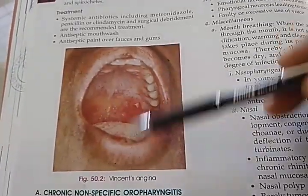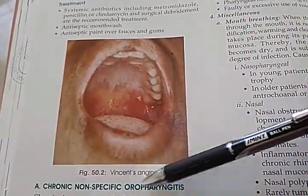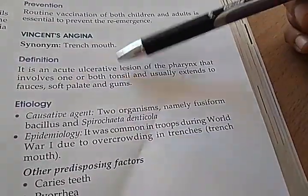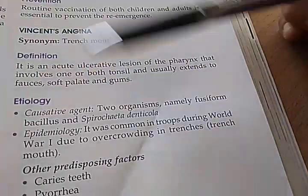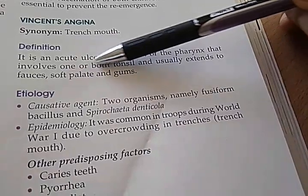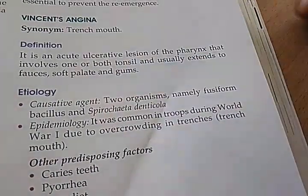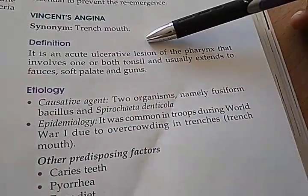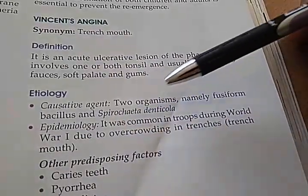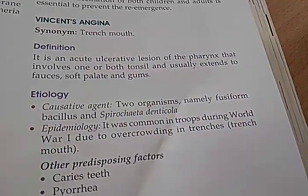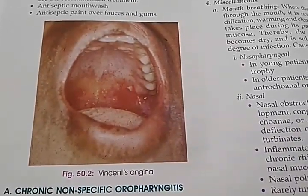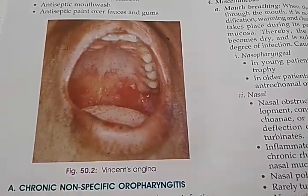This photo indicates Vincent's angina — also called trench mouth. It is an acute ulcerative lesion of the pharynx that involves one or both tonsils. It is caused by fusiform bacillus and Spirochaeta denticola — two organisms are blamed here. So it is an acute ulcerative lesion of the pharynx.